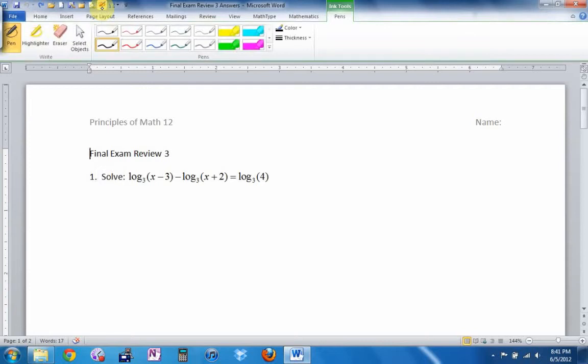So here's final exam review number three. By the way, I think on your copy there's a typo. I think yours is called final exam review number two, but it's number three, begins with a logarithmic equation. So one of the questions I feel totally fair game to ask you under the log section on your final is a logarithmic equation.